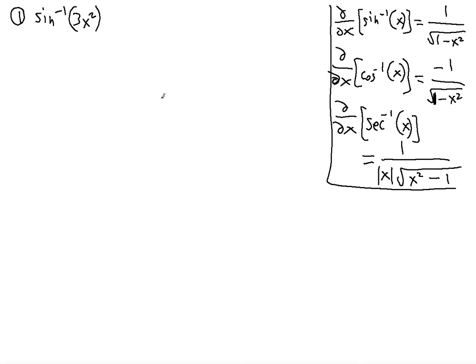Now let's differentiate the first function. You're going to follow the chain rule: first differentiate the arcsine, and then differentiate the 3x squared. Make sure you understand that in the chain rule, all the differentiation steps are multiplied together.